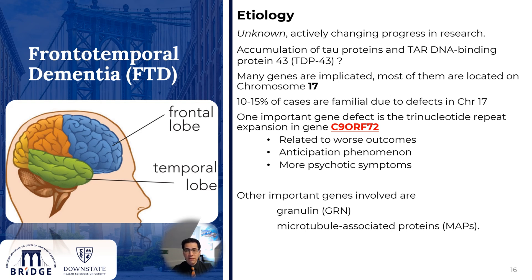One important gene defect to know is the trinucleotide repeat expansion of the gene C9ORF72, which is related to a much worse prognosis and outcomes. It also exhibits anticipation phenomena, meaning the disease manifests at a younger age with each subsequent generation, and it is related to showing more psychotic symptoms in these subjects.